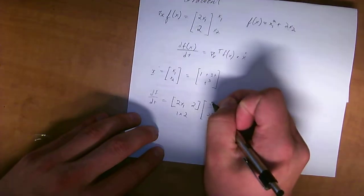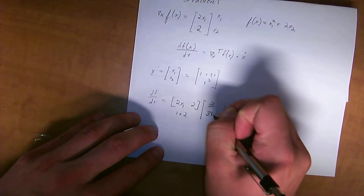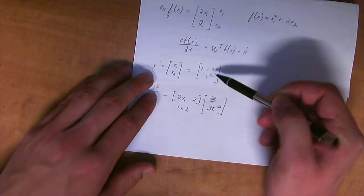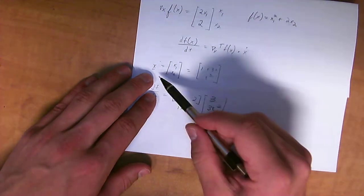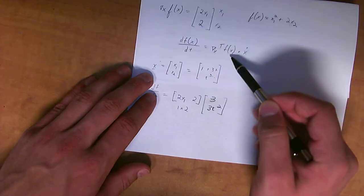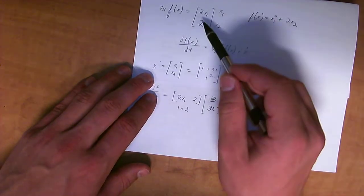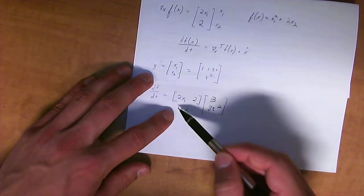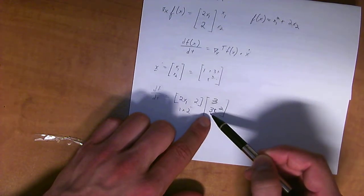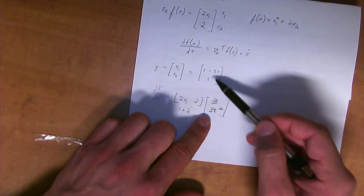So, this is the derivative of this, which is equal to x. So, the derivative of x is this. And then the gradient of the function is the partial derivatives. So, the gradient transpose times the derivative of this x value.